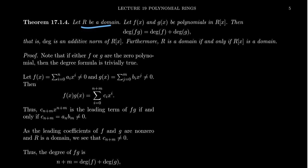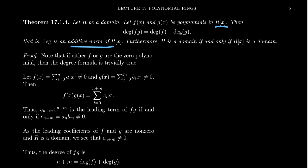Suppose r is a domain, and f(x) and g(x) are polynomials in r[x]. Then the degree of f·g equals the degree of f plus the degree of g. So on the polynomial ring r[x], when coefficients come from a domain, the degree function forms an additive norm. Using that additive norm, we can show that the coefficient ring is a domain if and only if the polynomial ring is a domain. Note that I am not assuming the ring r is commutative, so I am using 'domain' in the general sense.